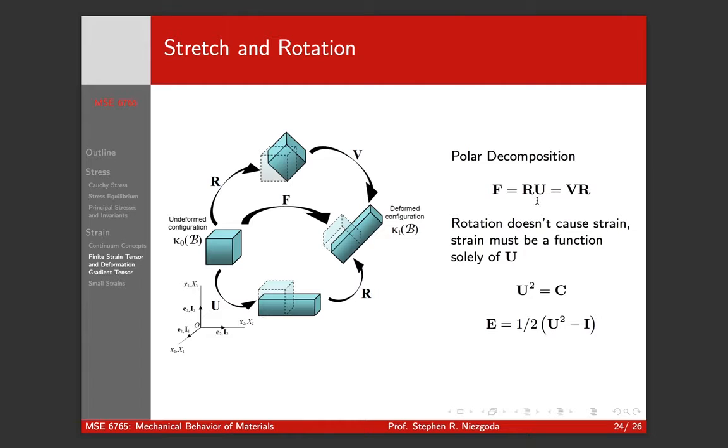This is a way of splitting the deformation gradient into a rotation part. So this has to be an orthogonal tensor, just like our transformation. This is a proper rotation, so it's orthogonal, so R transpose equals R inverse. And U, or V, which are stretches.